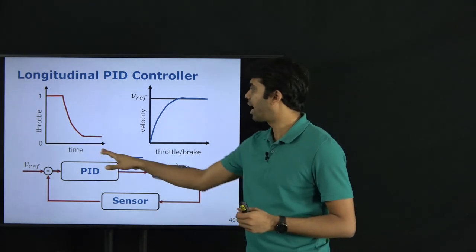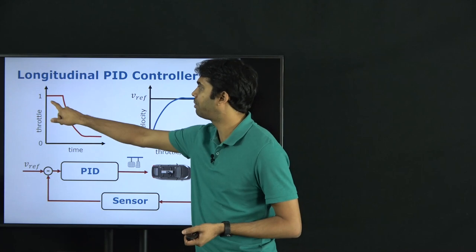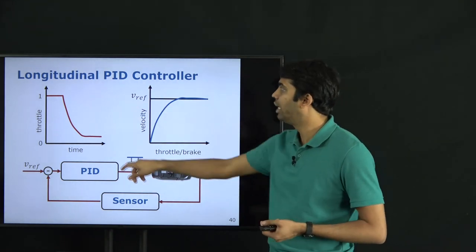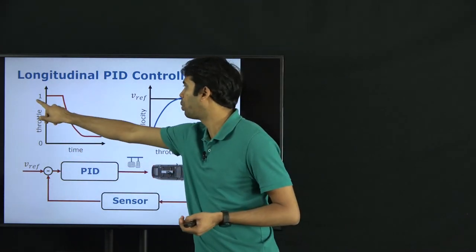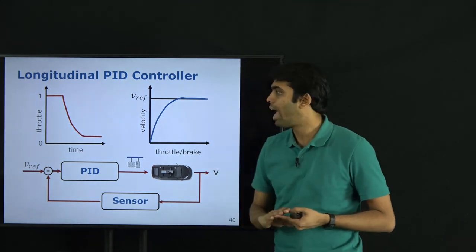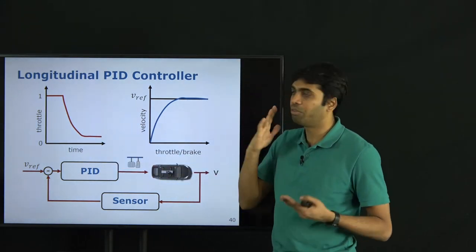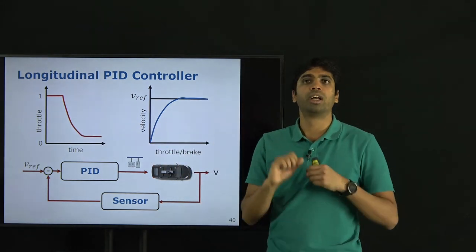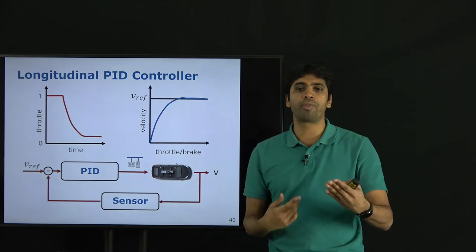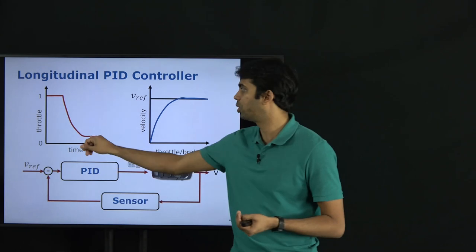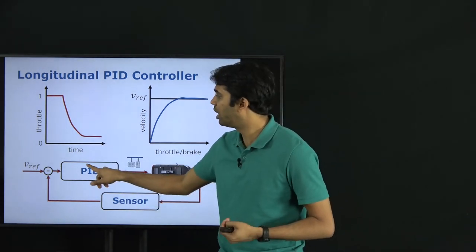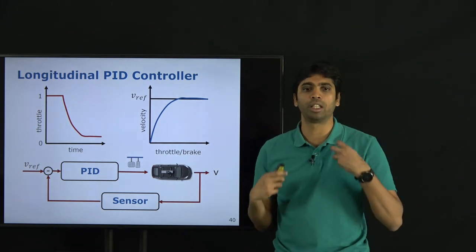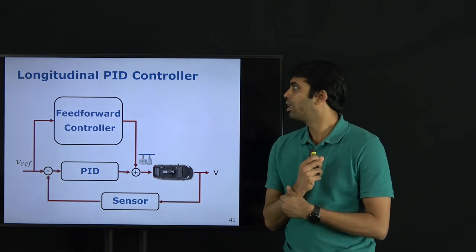The resulting PID control for longitudinal velocity would look like: starting from zero, full throttle is needed initially; as the car achieves the target velocity, less acceleration is needed, with some constant throttle to counter friction and disturbances. This produces a throttle/brake profile over time that achieves the desired velocity.